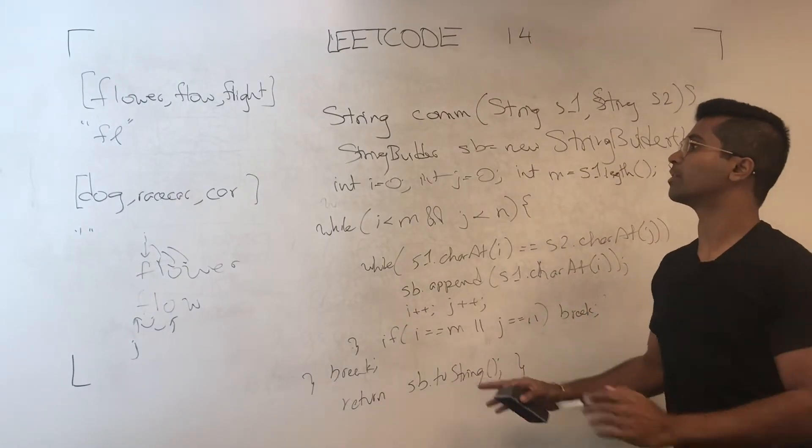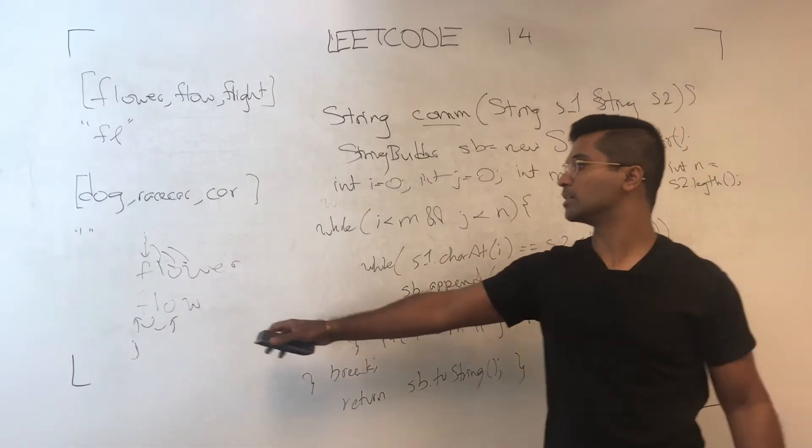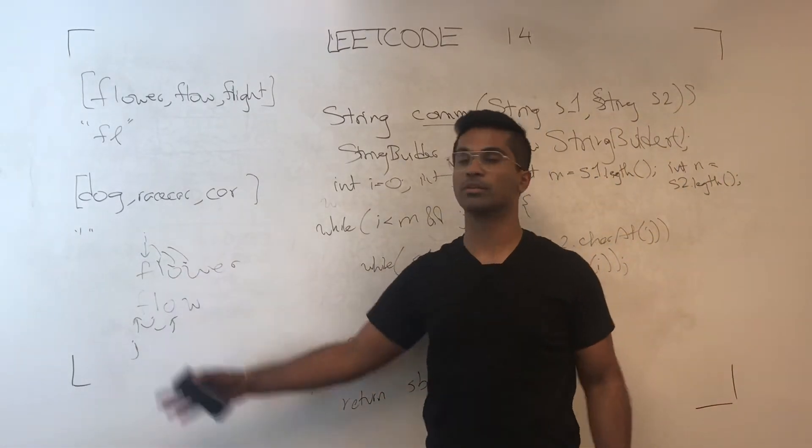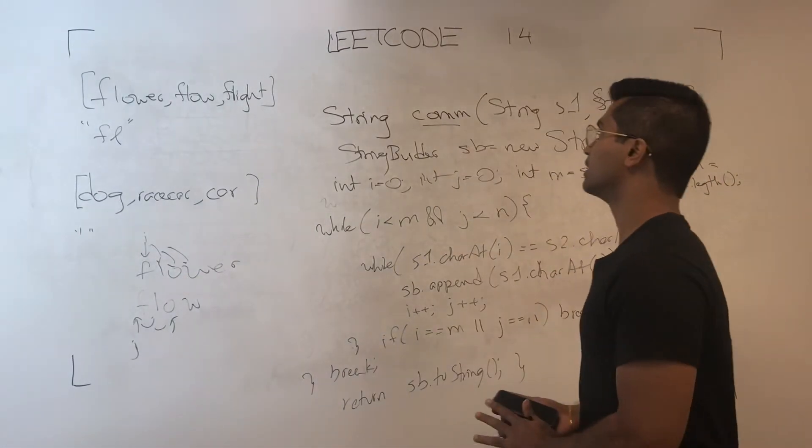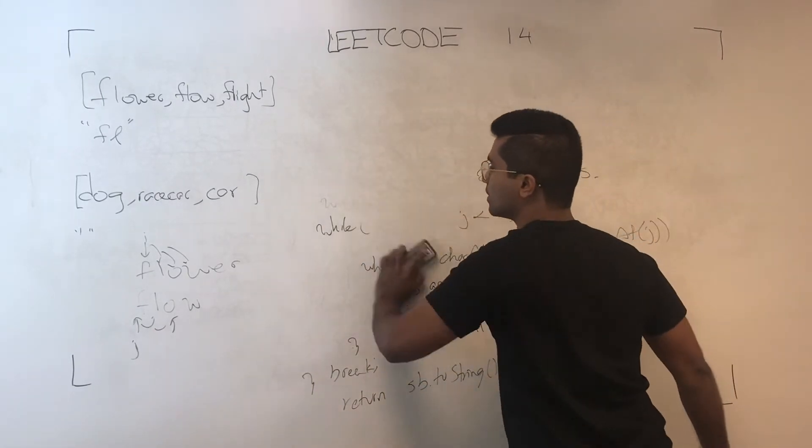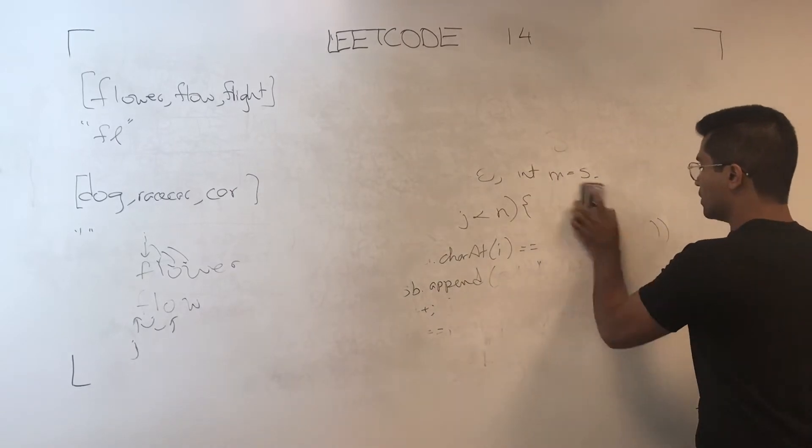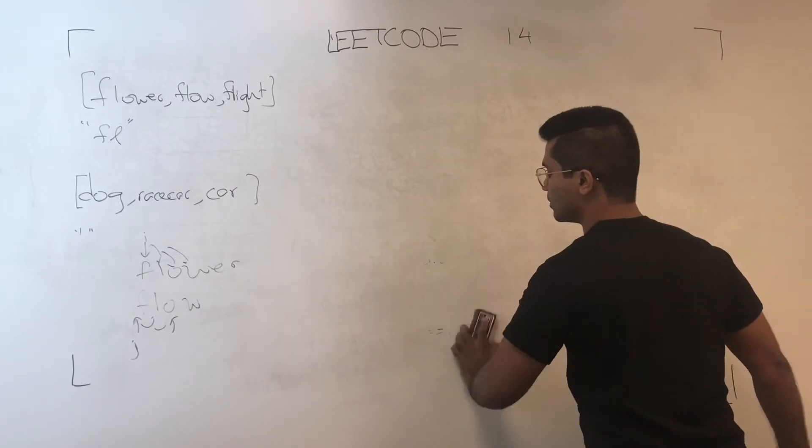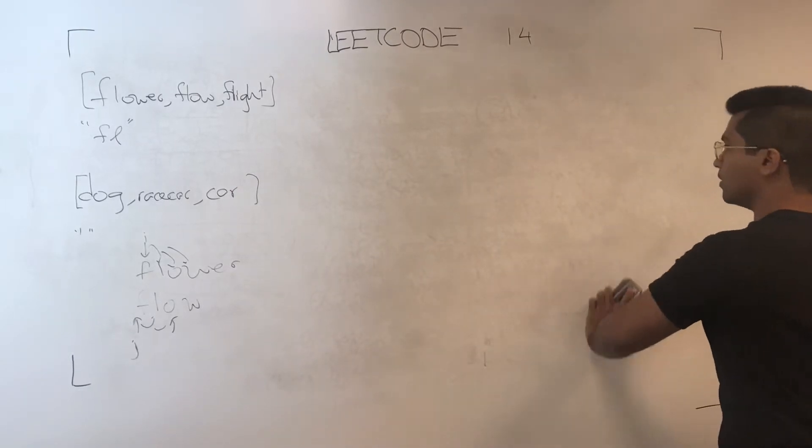So we can return sb.toString. Now what this method common does is, given two strings, it'll give you the prefix that is common right in the beginning. Now that the work is done, you can just use this to find the least common denominator for all these.